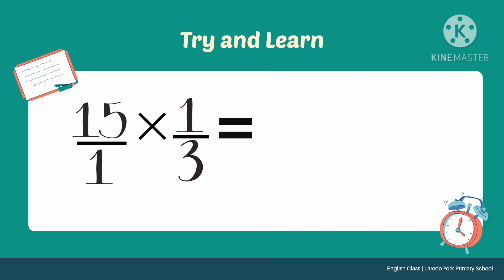Let us first multiply the numerator. The numerators are 15 and 1. So, 15 times 1.